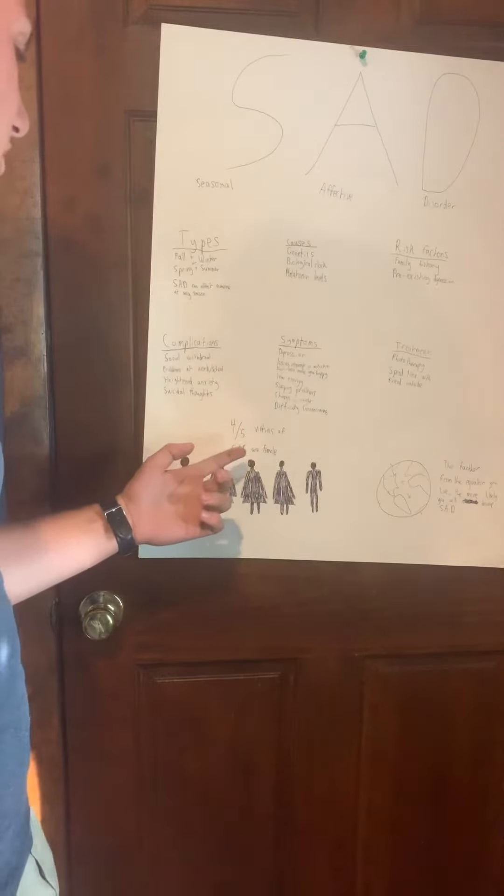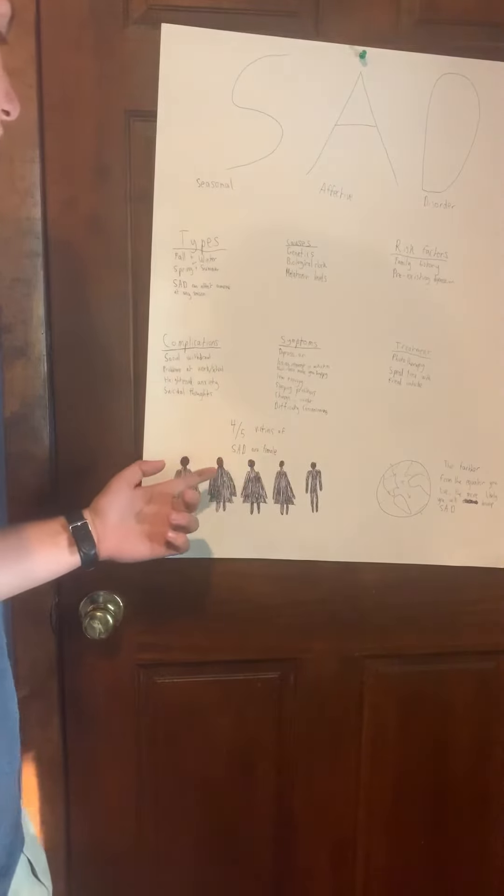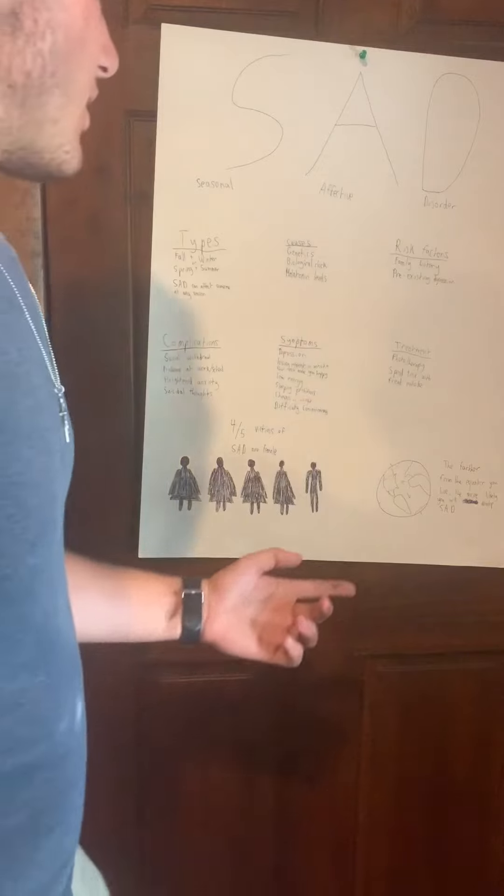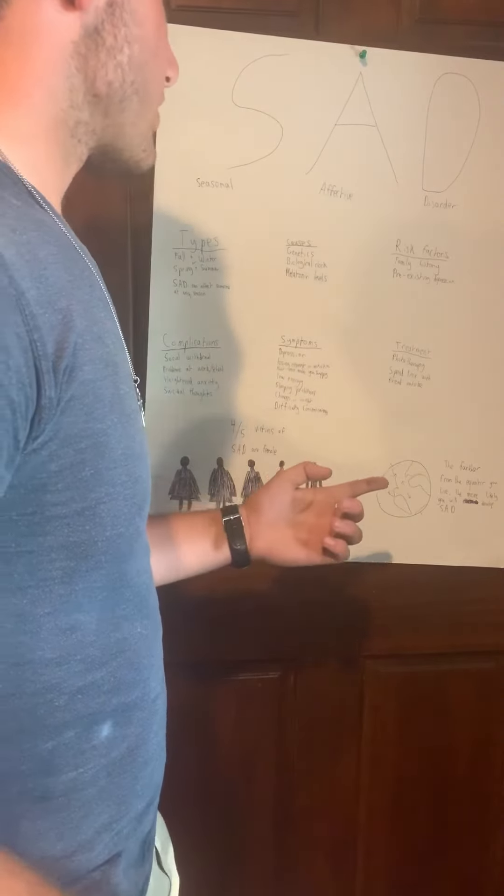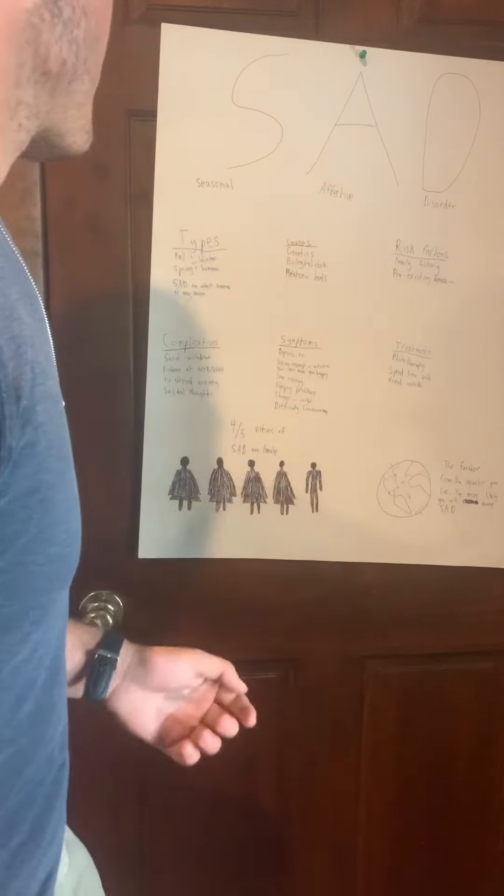There are also pills, like you can take pills to release more melatonin or serotonin. And another thing is you can just spend time with friends and family outside so you can get more accustomed to the weather and the season.